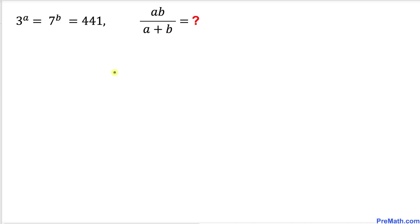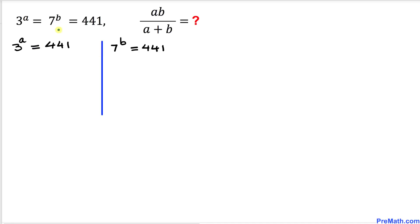The first thing we are going to do is write 3^a = 441, as you can see over here, and likewise we equate 7^b = 441 right over here as well.